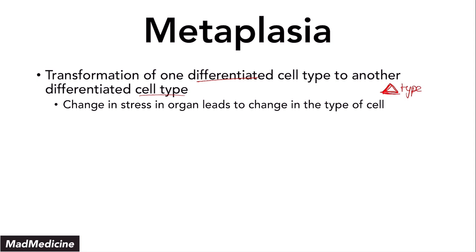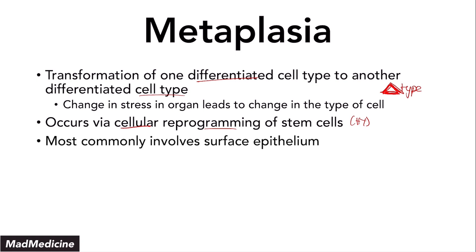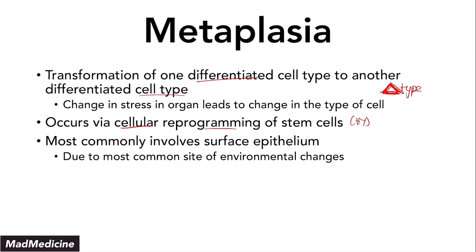Normally you have a baseline type of stress, but if you change the type of stress, you can go through metaplastic changes. Usually this will occur at the stem cell level via cellular reprogramming — this is very high yield, so commit this to memory. Metaplastic cells go from one cell type to another, and this most commonly occurs in the surface epithelium, because the surface epithelium is the most common site of environmental changes.